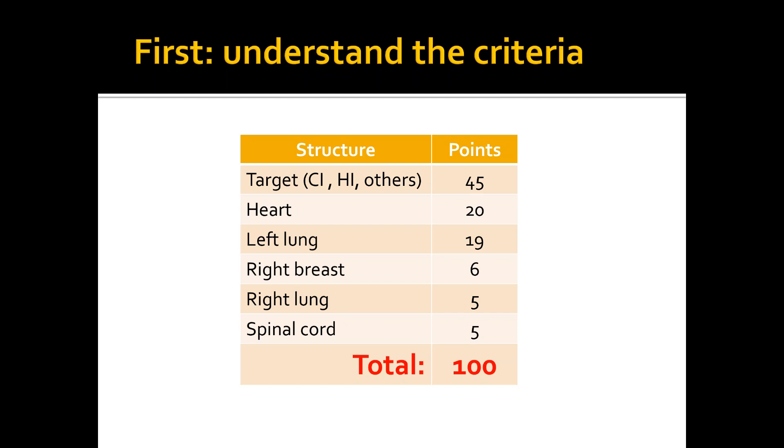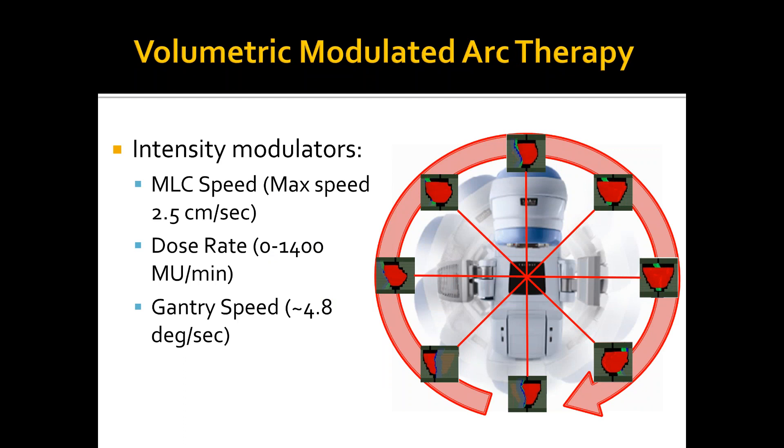A little bit about VMAT or volumetric modulated arc therapy. The gantry rotation is divided into control points. For Varian, there are about 178 control points in a full rotation. In this example, we see eight control points here. Each control point has different MLC speed with maximum speed of 2.5 cm per second, different dose rates from between 0 and 600 MU per minute or more than that for the case of triple F beams, and gantry speed, which is on average 4.8 degrees per second. The gantry speed can go less than that for the case that the dose rate is saturated. So the optimizer might want to push more dose from specific angles.